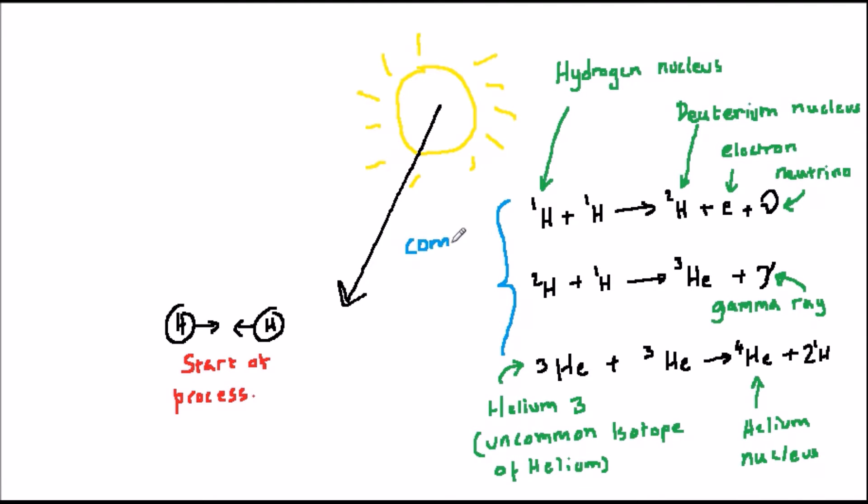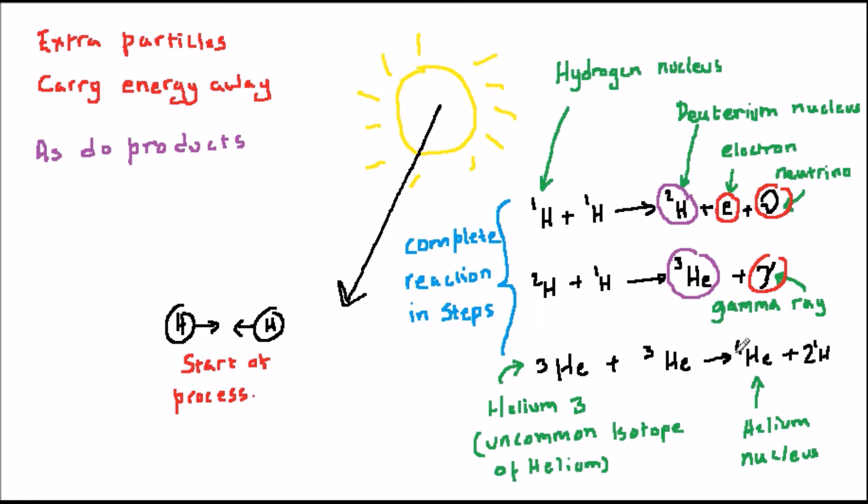This is the first of several similar reactions inside the Sun which make other isotopes of helium, and in heavier stars can also make carbon, nitrogen, and oxygen. The released energy is what makes the stars and the Sun shine.